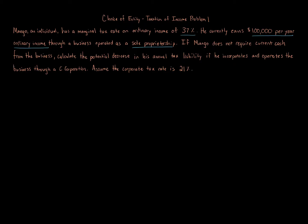Mango's rate is 37 percent. Now, if Mango does not require any type of distribution, you have to worry about the accumulated earnings tax, personal holding companies tax, and all these different special rules regarding retaining earnings and not paying them out. A lot of technology companies have run into these issues, but it is possible to do it — you can have plans and take certain steps to ensure you don't get hit with an accumulated earnings tax, basically avoiding the second level of taxation.